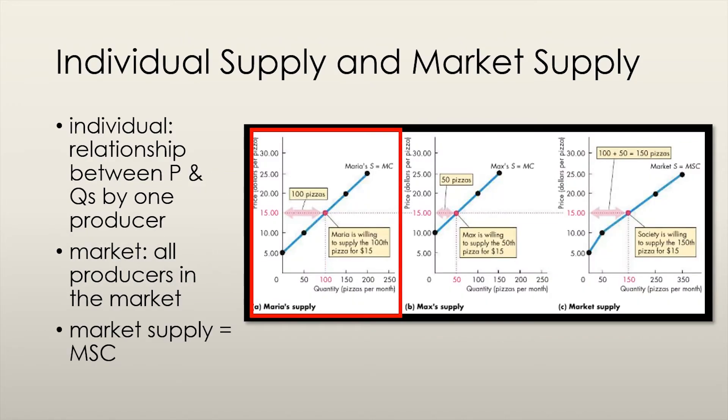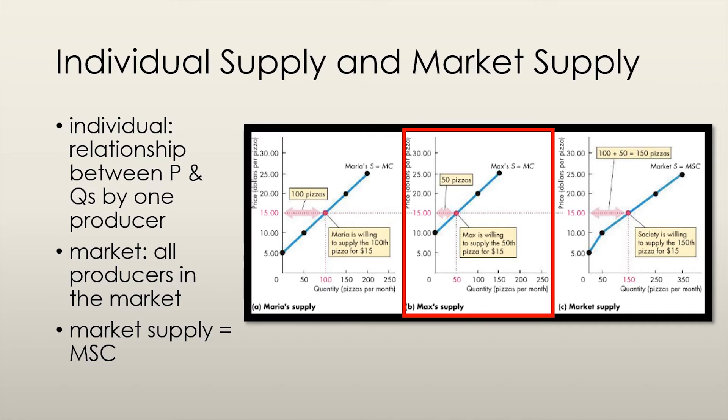The supply curve can also be split up into individual supply curves and the market supply curve. The individual supply curve represents the relationship between price and quantity supplied by an individual producer. This example is similar to the pizza example for the demand curve, but it's from the perspective of the producer. Again, we're going to assume that we're in the two-producer economy where Mary and Max are the only suppliers of pizza. Just like with the market demand curve, we can take the horizontal sum of the two individual supply curves to get our market supply curve. This is the same as adding the quantity supplied at each price for our individual producers.